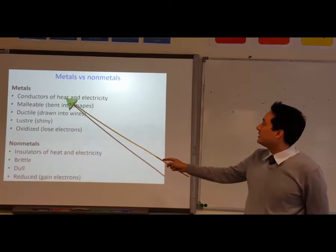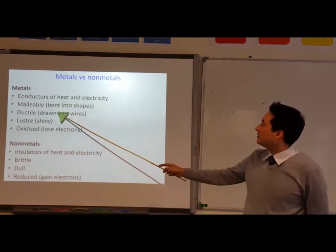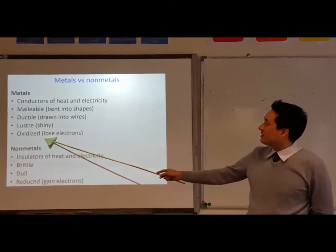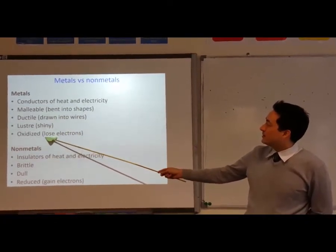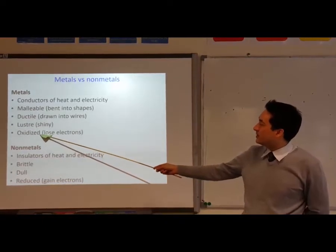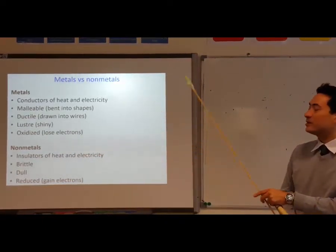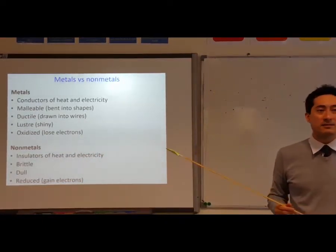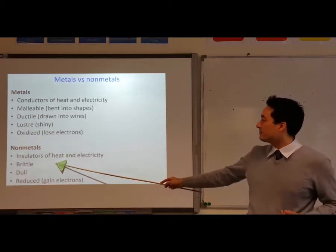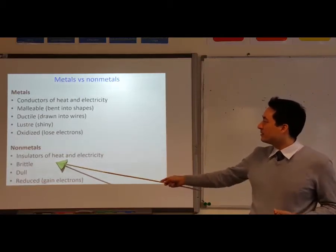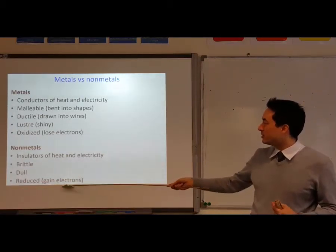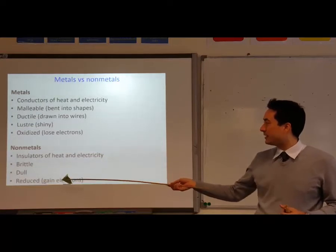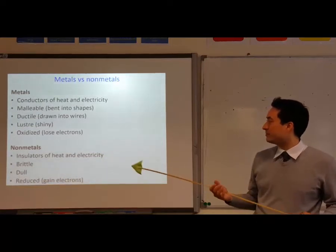Key stage three: conductors of heat and electricity, malleable, ductile, shiny, oxidized — that could be key stage three or semi-new. Metals lose electrons, so they all become positive cations. Non-metals, similarly — it should be revision — they gain electrons, so they become negative.